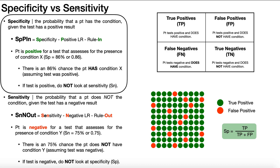For any condition you could possibly think of — an ACL tear, a PCL tear, a meniscus tear, a herniated disc in your spine — you have to have ways to assess whether or not somebody has that condition. Those are done through special tests, and every single special test is going to have a specificity value and a sensitivity value. So let's say we've got condition X, and there might be three tests to assess for it. Each test will have its own specificity and sensitivity.